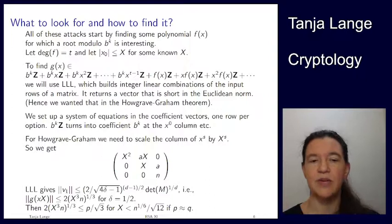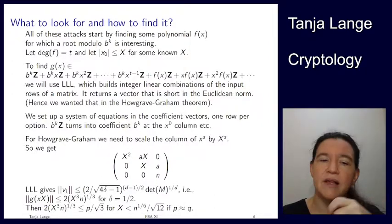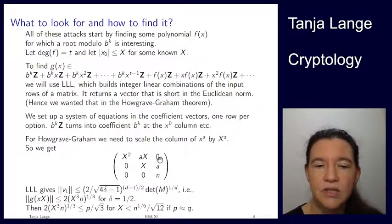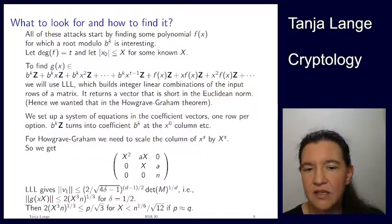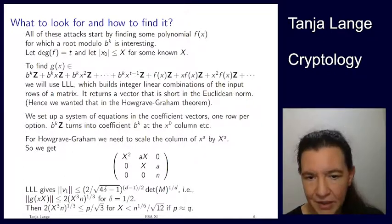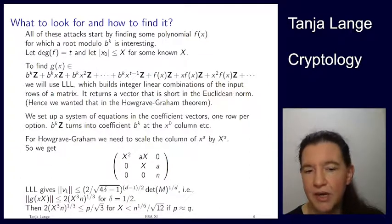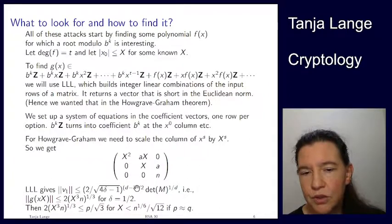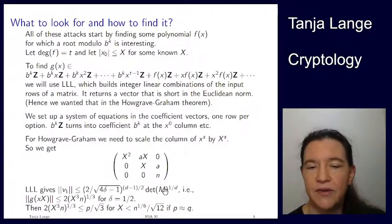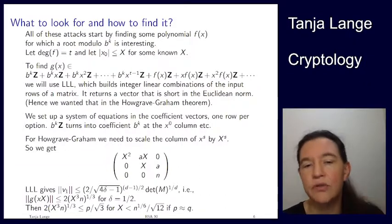Putting it all together: we have a matrix, run LLL on it, and from the LLL guarantee the first output row satisfies that the Euclidean norm of that vector is at most this expression. Plugging in values: d = 3 (3×3 matrix), delta = 1/2 so four times delta gives two, two to the power (3−1)/2 is just 2. The determinant of M is easy since it's triangular — just the main diagonal product: X²·X·n = X³·n. Taking the 1/3 root gives X·n^{1/3}.